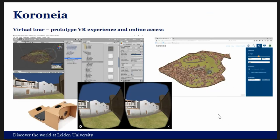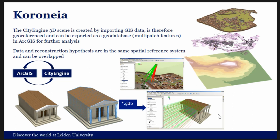The advantage of working with this software is the interoperability with ArcGIS. The CityEngine 3D scene is created by importing GIS data and you can also export the scene back into ArcGIS for further analysis. I included a rule file created by Esri that allows you to sample points and panels on the surfaces of buildings to perform visibility analysis in a true 3D GIS. The fact that the 3D reconstruction and your original data overlap is also a way to keep track of what kind of reconstruction you're making and based on which data — part of the intellectual transparency I was trying to develop.